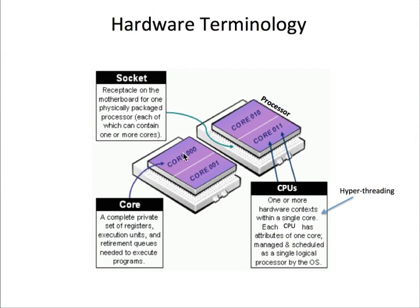Years ago, the processor was the lowest level of hardware at which the instructions comprising a computer program could be executed. However, since the early to mid-2000s, transistor densities have increased to the point where the circuitry could be replicated on a single processor chip, so that now a processor could have multiple completely independent processing units. We call these units cores.